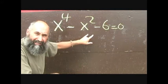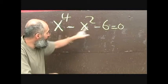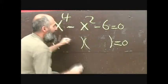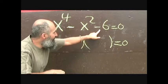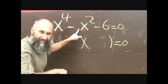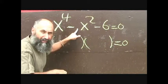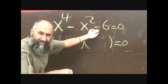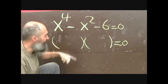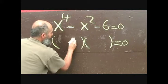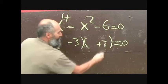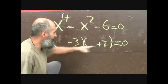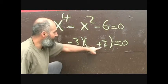Now I changed the sign and dropped the 5, so we have x squared minus x minus 6 equals 0. Again, you go bracket, bracket, and ask yourself: what two numbers multiply to give you negative 6 and add to give you negative 1? We're dealing with 2 and 3, but they have to multiply to negative 6, so it's negative 3 and positive 2. Negative 3 times 2 is negative 6, and negative 3 plus 2 gives you negative 1.